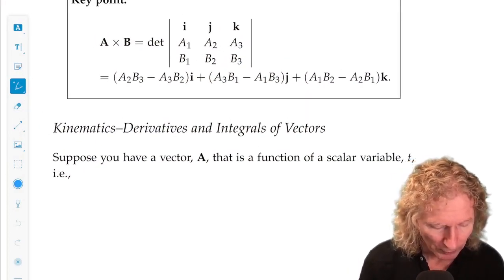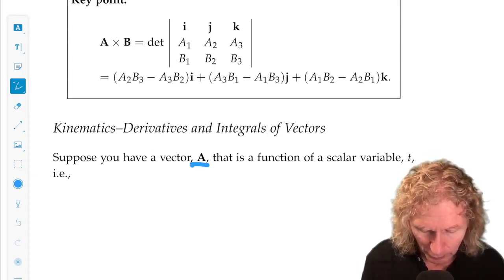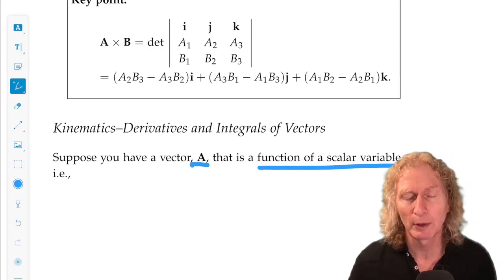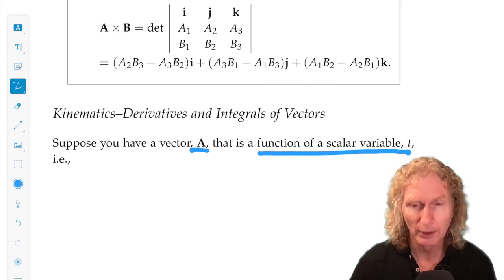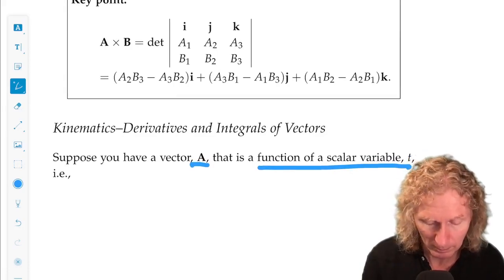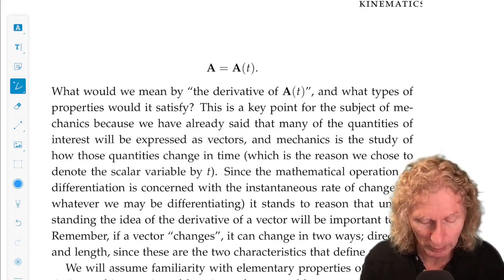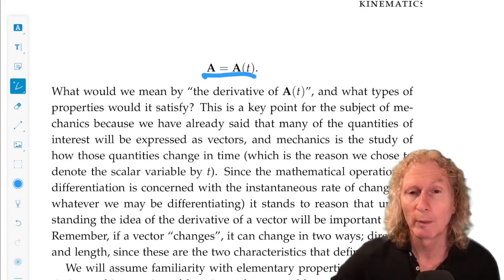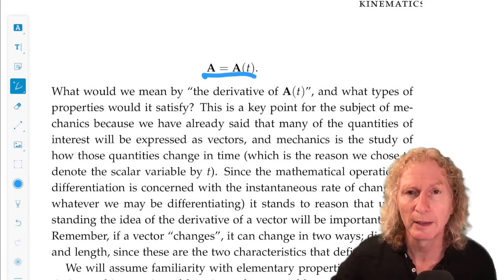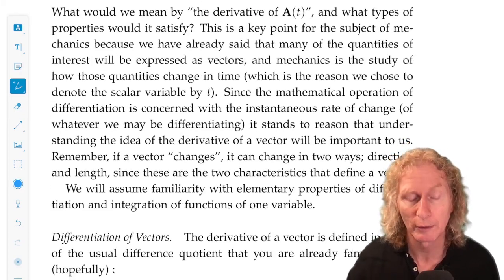We're going to consider now that we have a vector that's a function of a scalar variable we'll call t, and in the applications that we're going to consider in here, t we can interpret as time. Time is a scalar, a real number. And we'll write that function in this way, and remember, it's still a vector. It's defined by direction and length for each value of t. So both could change as a function of t, for example.